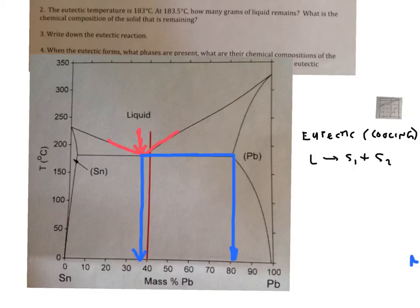The question was, how many grams of liquid remains, what is the chemical composition of the solid that is remaining? Well, we know the chemical composition of the solid remains is given by the end point of this tie line. So the chemical composition of the solid that remains is 82 percent lead. So we can answer that one right away: 82 weight percent lead.